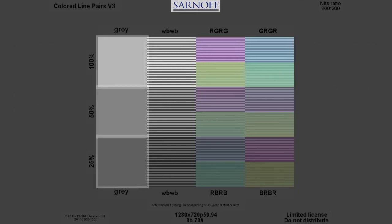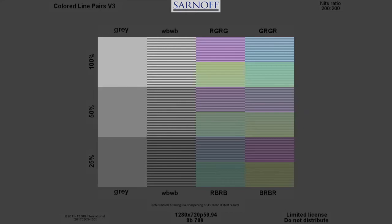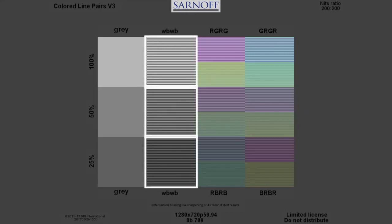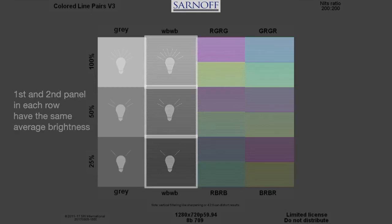The first panel is flat gray. The second panel is alternating black and white lines that, together, have the same average brightness as the first panel.